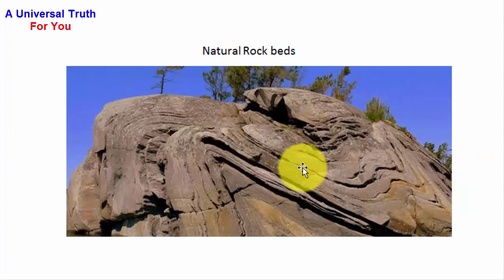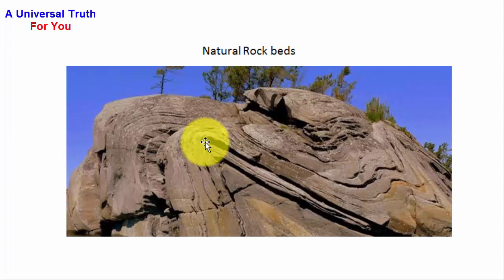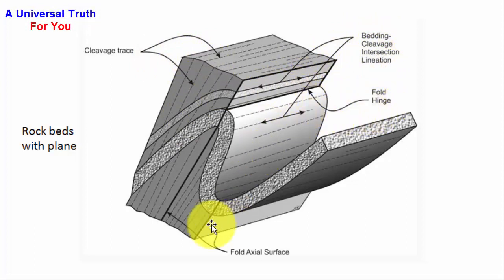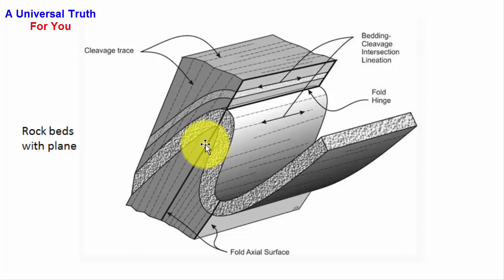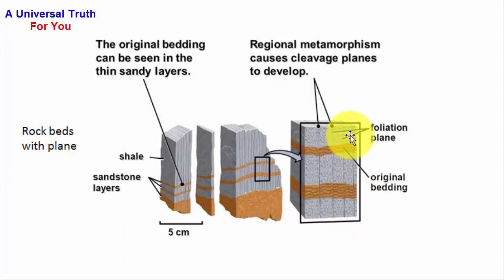Here is a beautiful structure of natural rock beds. In a further video, I will describe what the plane of cleavage and the plane of foliation are. You can see the rock bands with plane, cleavage, bedding cleavage, intersection, lineation, fold hinge, and fold axial surface. The original bedding can be seen in the thin sandy layers. Regional metamorphism causes cleavage planes to develop. You can also see the foliation plane and the structure of sandstone layers.